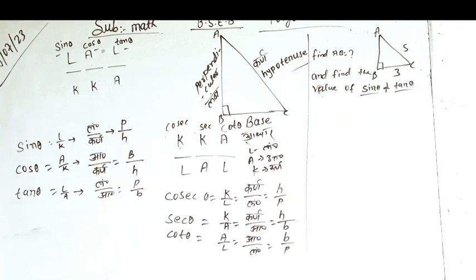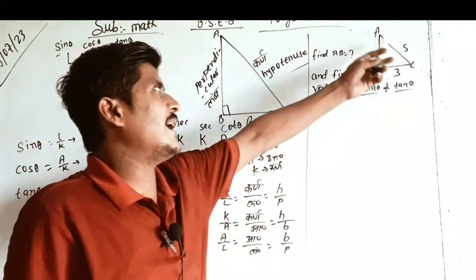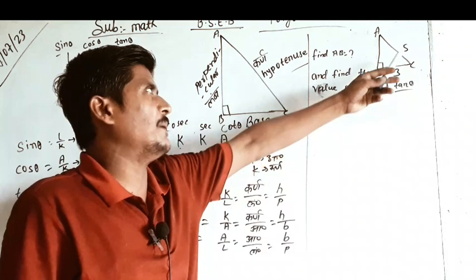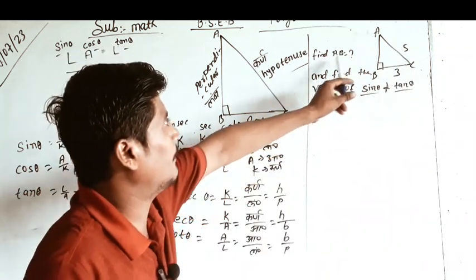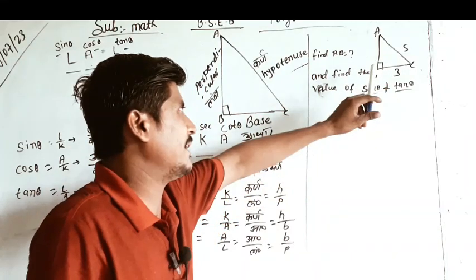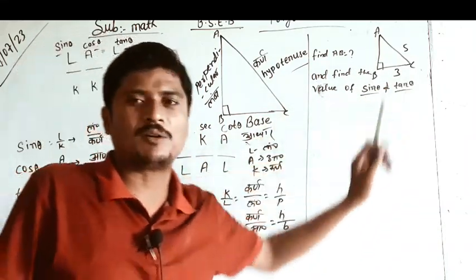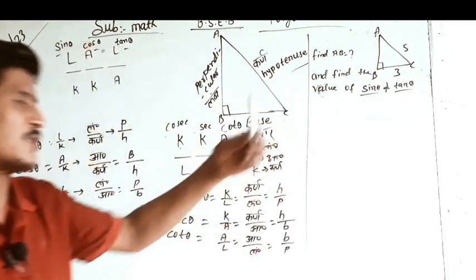Let's talk about this question. In which we have a hypotenuse and base. What do we have to do here? Find AB. That means we have to find the length of perpendicular. After that, we have to find the value of sin theta and tan theta. Let's solve this.